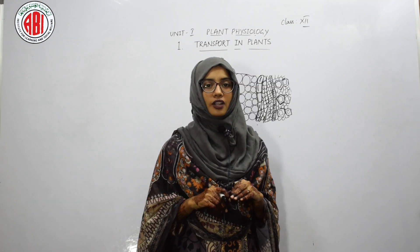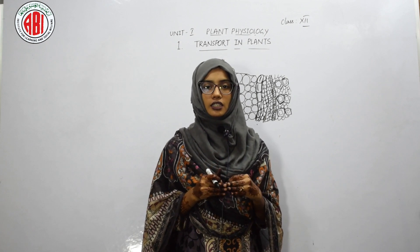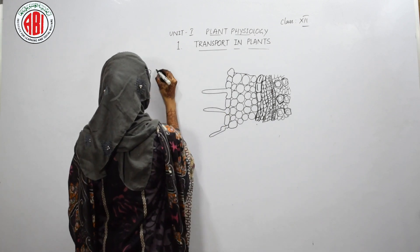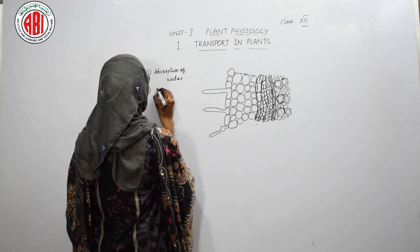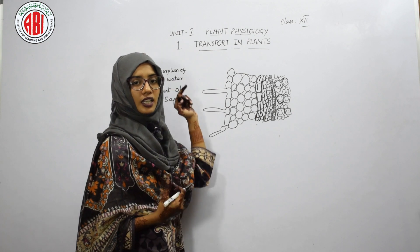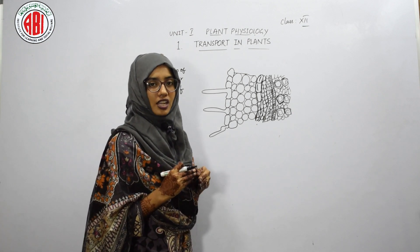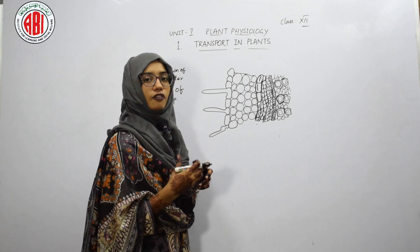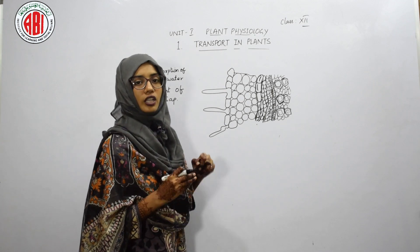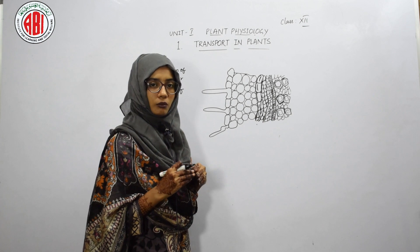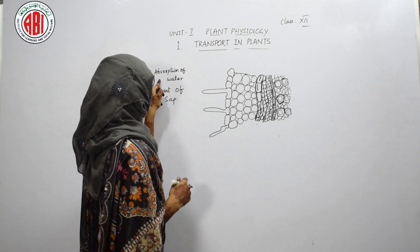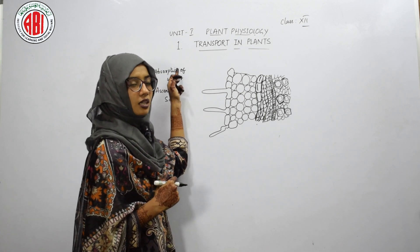When we talk about water transport from the soil towards the leaf, the entire process takes place in two steps. The first step is absorption of water and the second is ascent of sap. In the first process — absorption of water — we study how water is transported and absorbed from the soil by the roots. In the second step — ascent of sap — we learn how water from the roots is transported upward to the leaves.